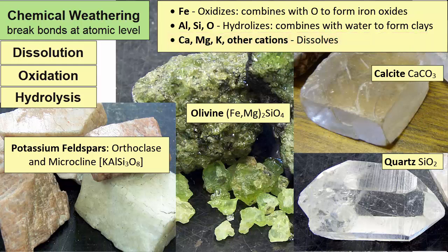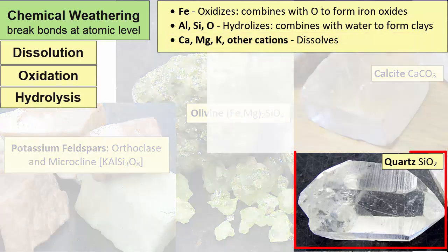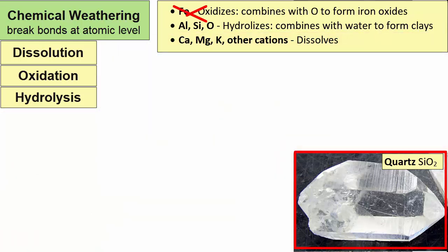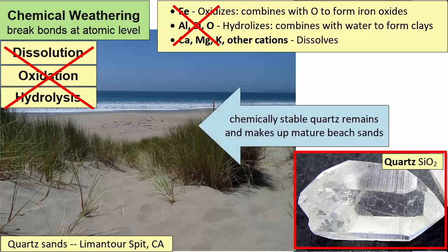Let's review some examples, starting with quartz, SiO2. No iron (Fe) in the chemical formula, so no rust. No aluminum (Al), so no clay. Quartz is composed entirely of covalently bonded silicon-oxygen tetrahedra. So what happens to quartz during chemical weathering? Under all but the most extreme environments, nothing. It remains in the rock, and thus it's one of the most common sediments found on Earth's surface, making up most mature beach sands.